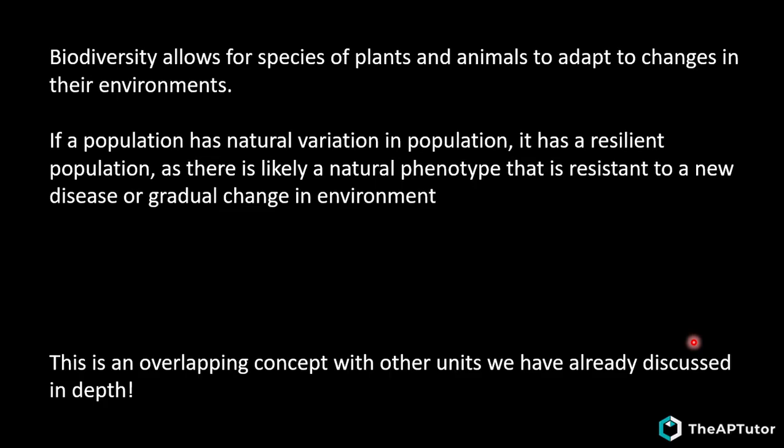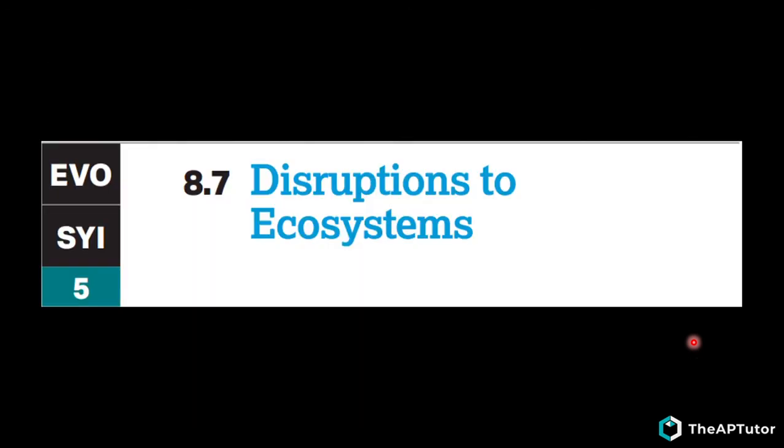Biodiversity allows species of plants and animals to adapt to changes in their environment. If a population has natural variation, it has a resilient population and will likely have a phenotype resistant to new disease or gradual environmental change. This is an overlapping concept with other units already discussed, so we won't go too in depth here.